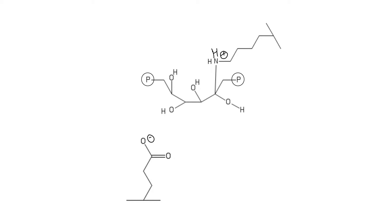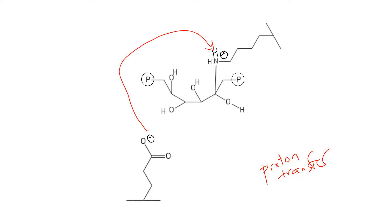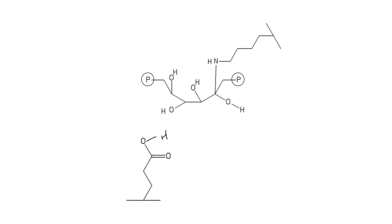The next step of this reaction is just a proton transfer from my lysine to my glutamate. This negative charge on the glutamate is going to come up and grab a proton off of here. So now we're in the right protonation states for the next step.